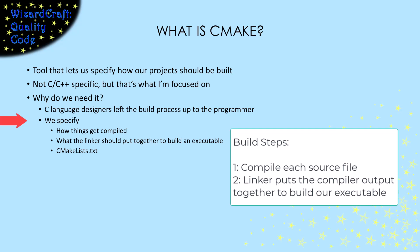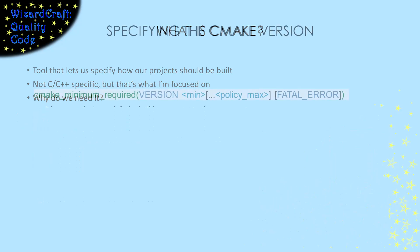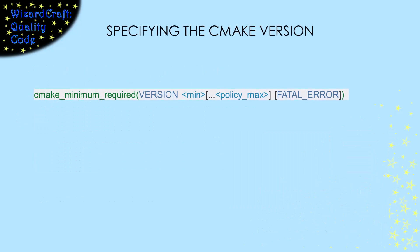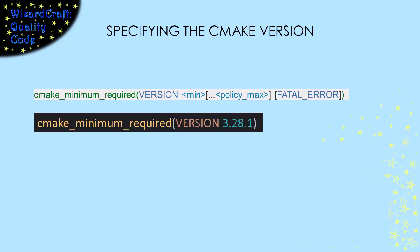CMake lets us specify how things get compiled, and what the linker needs to put together, in a file named CMakeLists.txt. The first thing you need to do in the CMakeLists.txt file is to specify the versions of CMake that you want to use. We do that with the cmake_minimum_required command. In its simplest form, you just specify the minimum version you want to use. Then you can build your CMakeLists.txt file using that version, and future versions will be backwards compatible, until you get deprecation warnings.